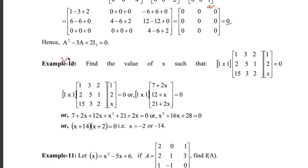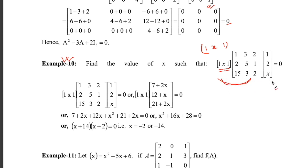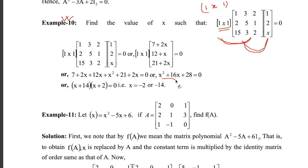In example 10, note that [1, x, 1] is a row matrix with three components. The middle is a 3×3 matrix, and the last is a column matrix with three rows and one column. You can multiply either the first and second matrices first, then multiply by the third, or multiply the second and third first. This gives a quadratic equation, and by solving it you can find the value(s) of x.